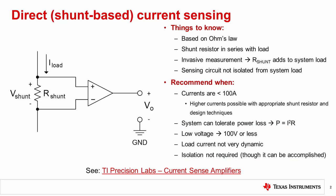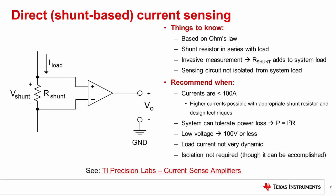Direct current sensing typically is implemented for load currents less than 100 amps, which are not very dynamic, and at voltages typically less than 100 volts. For more information on direct current sensing, please watch the TI Precision Labs video series on current sense amplifiers.